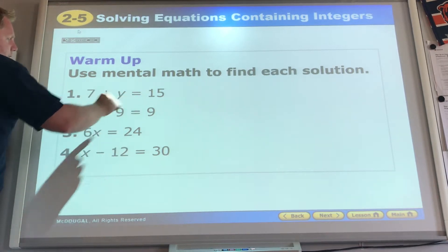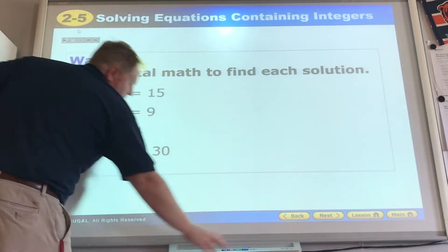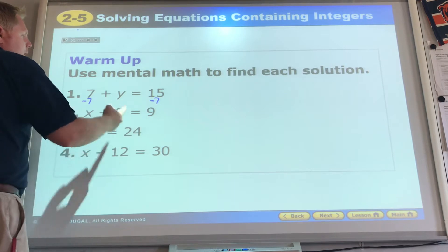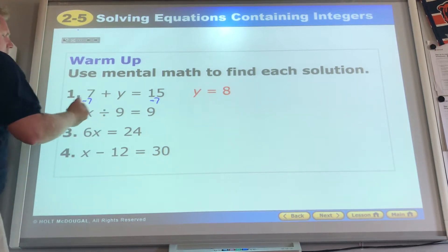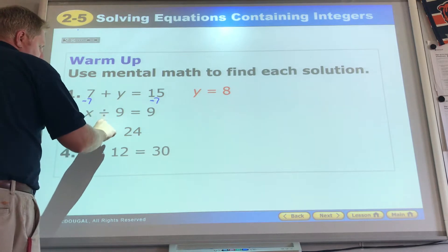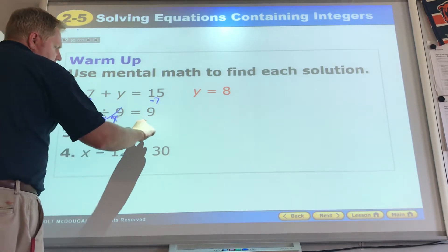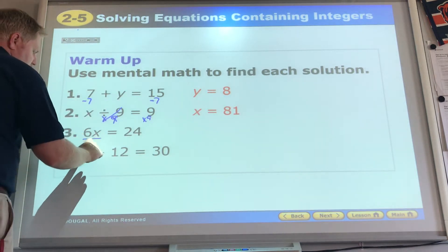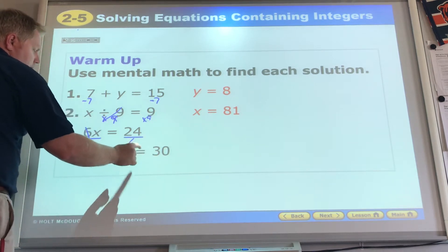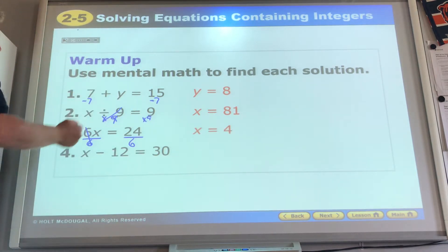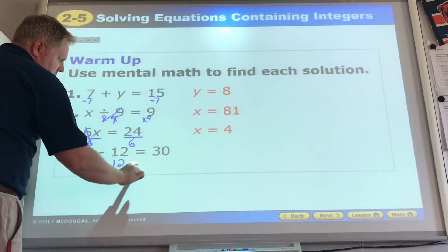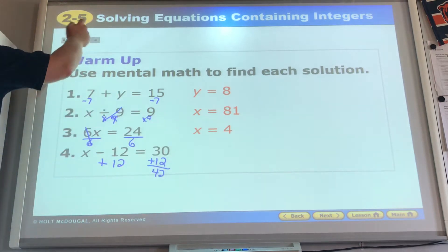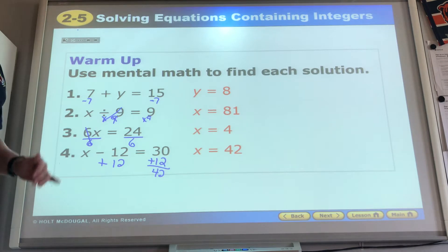7 plus y equals 15. Inverse operation tells us, minus 7, minus 7, y is 8. Division, that means we use multiplication times 9, it's 81. Multiplication, we undo that with division, 4. Subtraction, we undo it with addition, 42. These are the inverse operations, you feel pretty confident.